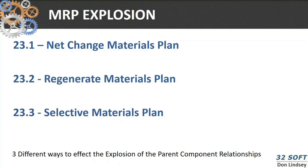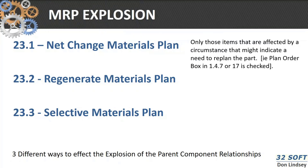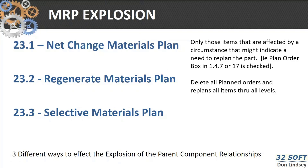In terms of the MRP explosion, there are three types: net change, regeneration, and selective. Net change means that anything that has affected a particular item will cause the planned order area — 1.4.7 — to be checked, and you should use 23.1 to do net change. Regeneration deletes all planned orders and replans them throughout the entire product structure, and then selective MRP replans only that item.